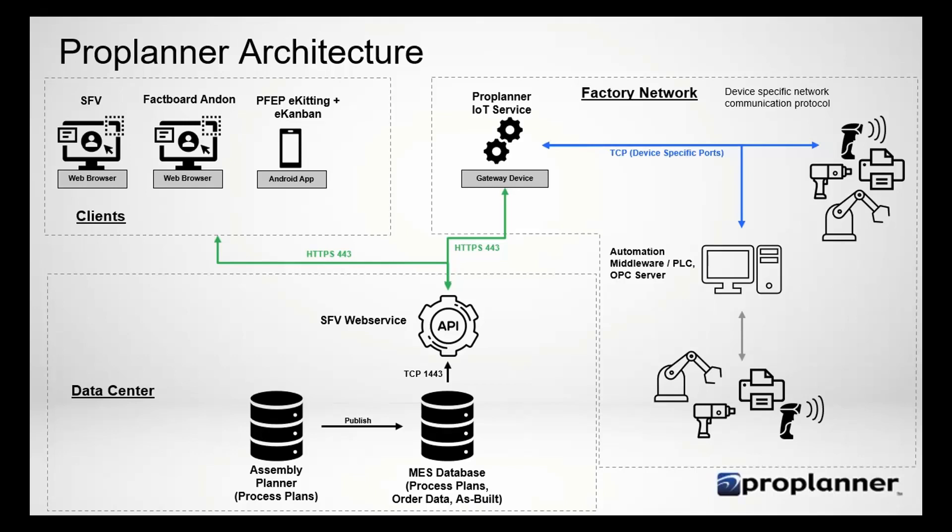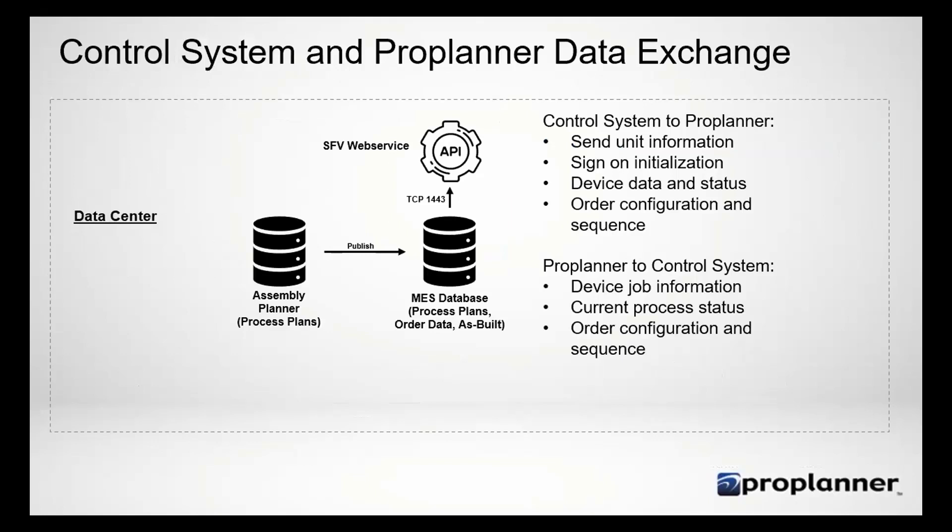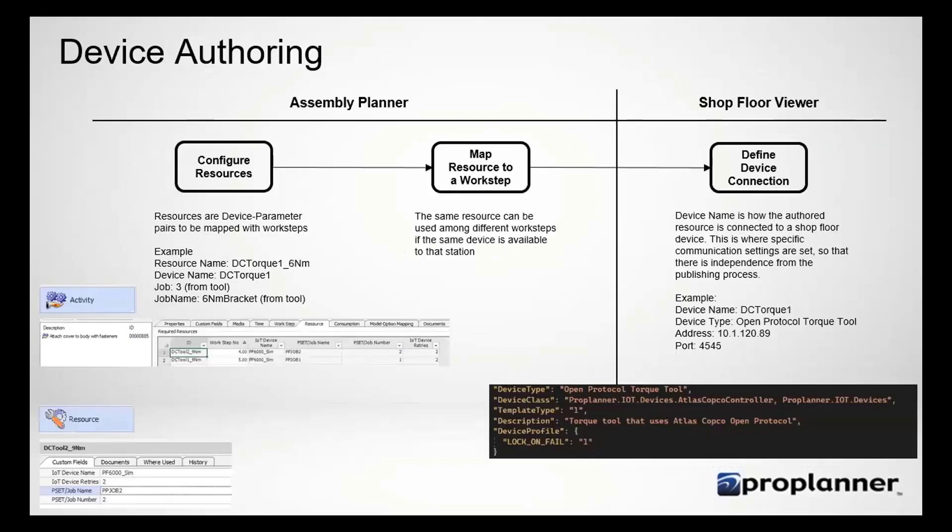So the hard work is done in the bottom left by the server technology that's in your network or on Azure. The top left is what you see and the factory network on the top right. So that's essentially the control system, these databases, and we have these secure web service APIs that are talking to Shop Floor Viewer, PFAP, and the Internet of Things device.